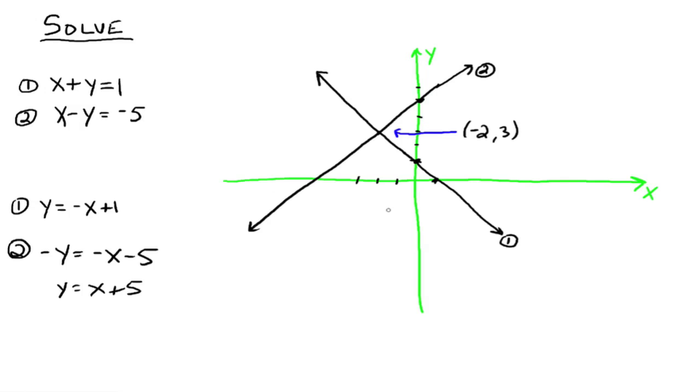So in this case, there's just one ordered pair. So the solution is negative 2, 3. It's the one point that both lines here have in common. That's it. So in other words, you're going to graph the first equation, whatever it graphs to, graph the second equation, whatever it graphs to, and then we're looking to see where those two graphs intersect. And all the points of intersection are solutions to the system. So now that brings up the following idea.